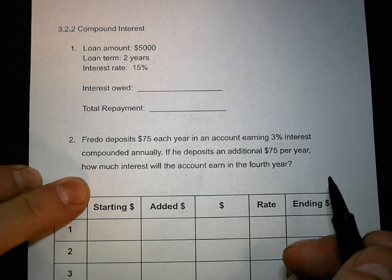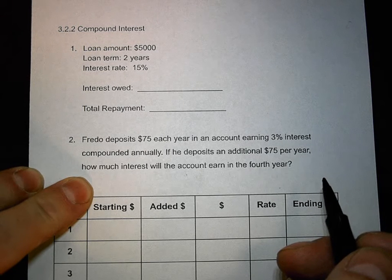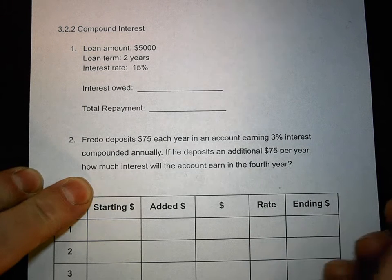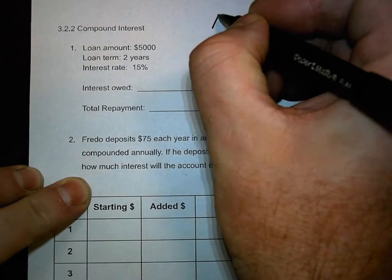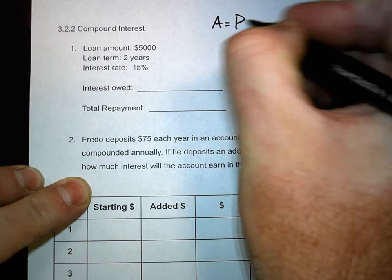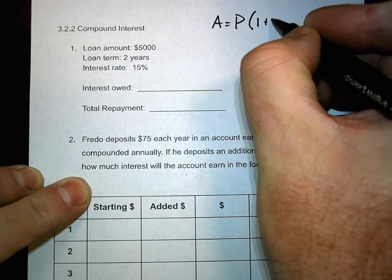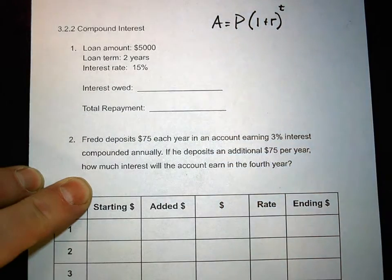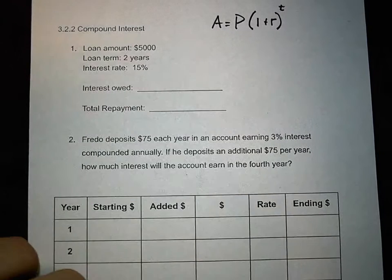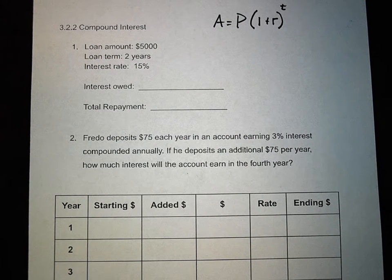What's the formula for compound interest? It's on your yellow sheets. A equals P times one plus R, to the power of time. So here we've got a loan for five thousand dollars for two years at a rate of fifteen percent.